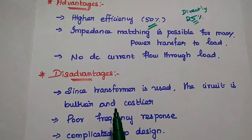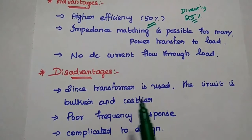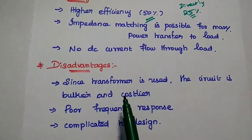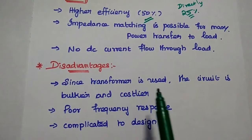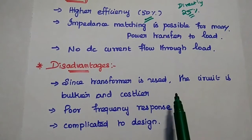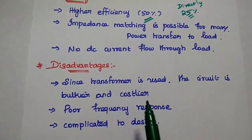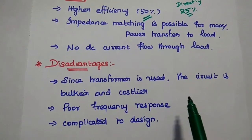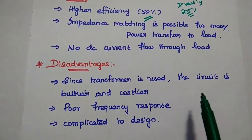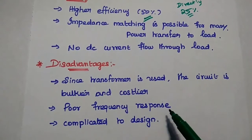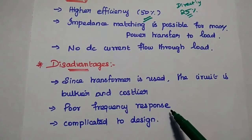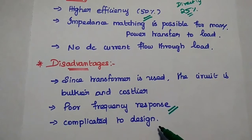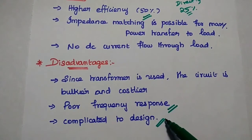Disadvantages of transformer coupled Class A amplifier: since the transformer is used in the circuit, it is bulky as well as costlier when compared with directly coupled Class A amplifier. It also provides poor frequency response, and it is a little bit complicated to design.